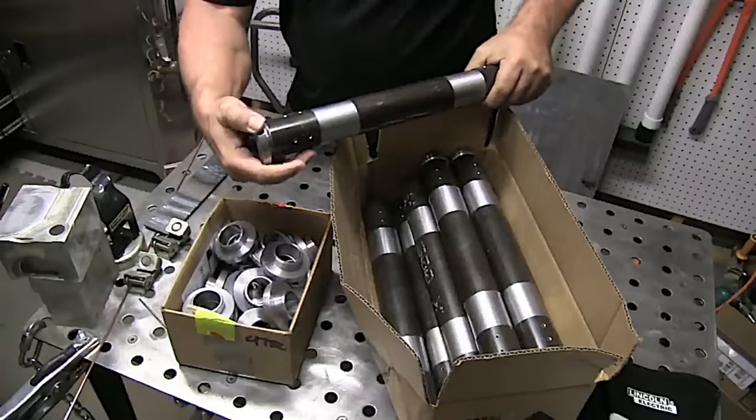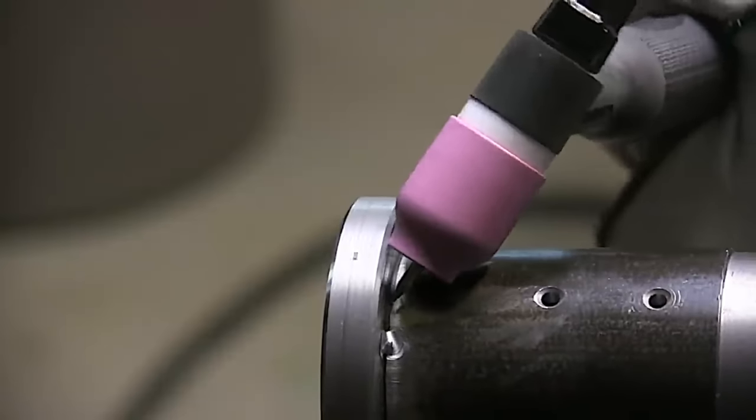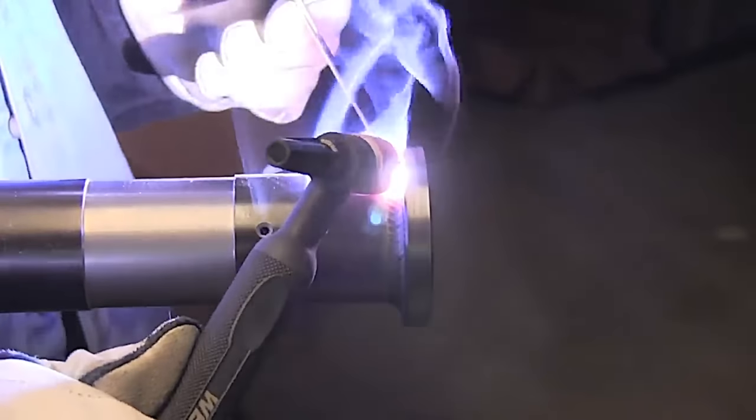Now this is that same part. I did quite a few of these. I decided instead of using the stationary torch holder that I would get the tail stock out of the way and just weld them by hand and kind of get some more practice walking the cup, get used to that again.